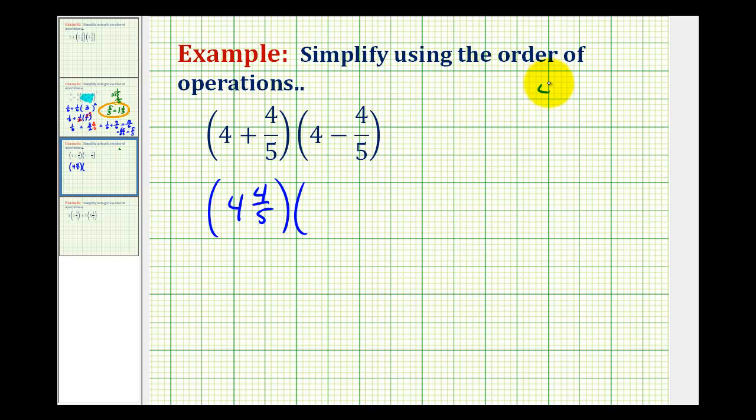If we write this vertically, we can see we're going to have to borrow from the 4. So if we borrow 1 from the 4, this would change to a 3, and then we'd have a 1 here, which is the same as 5 fifths. So we borrow 1 from the 4, that gives us 5 fifths in the fraction column.